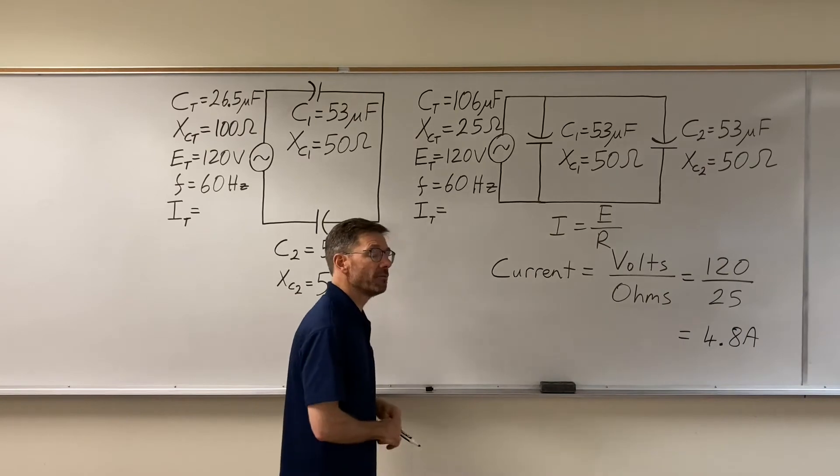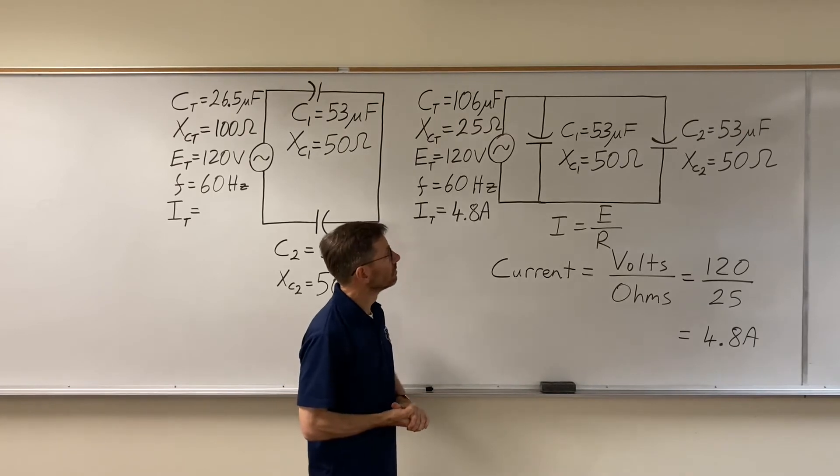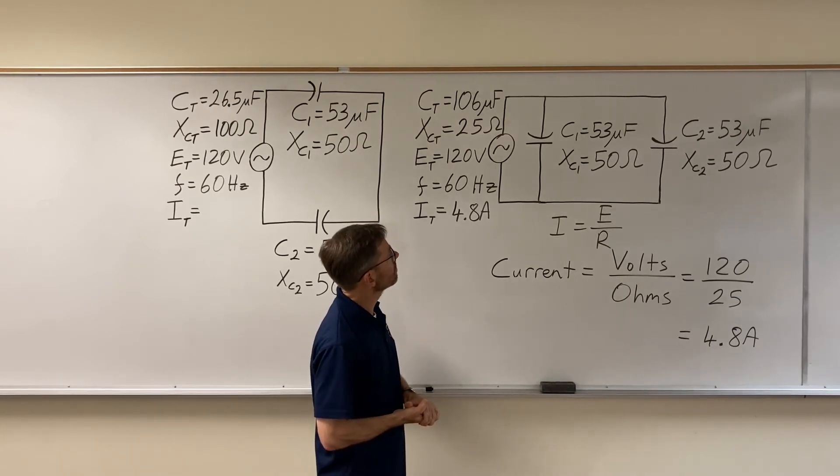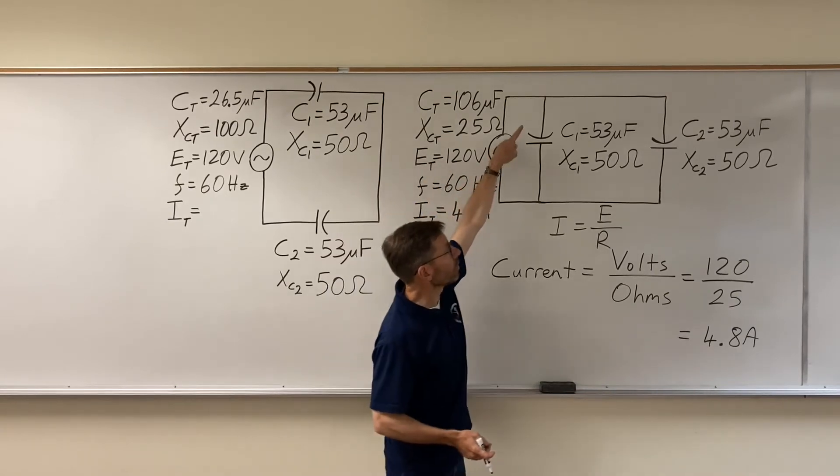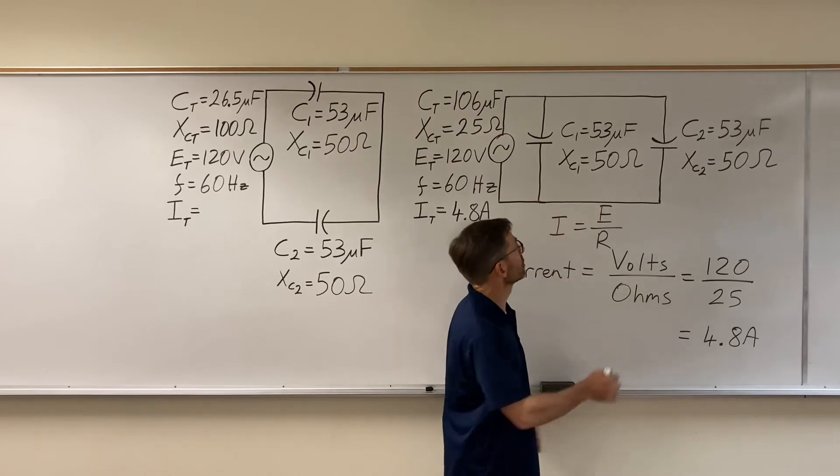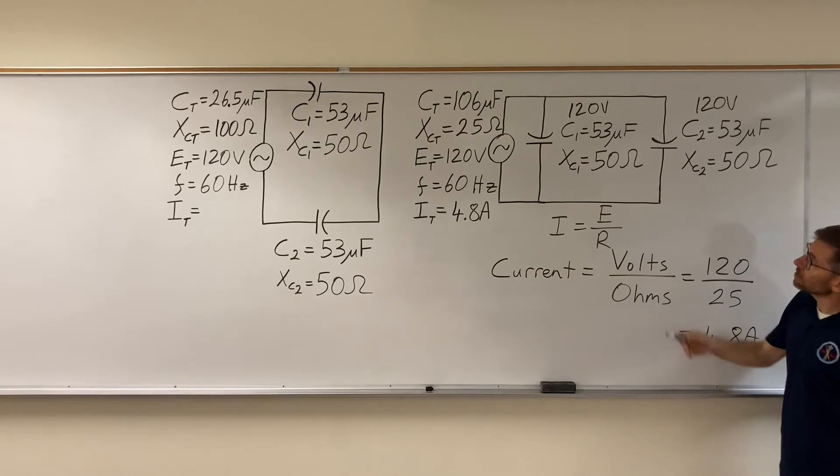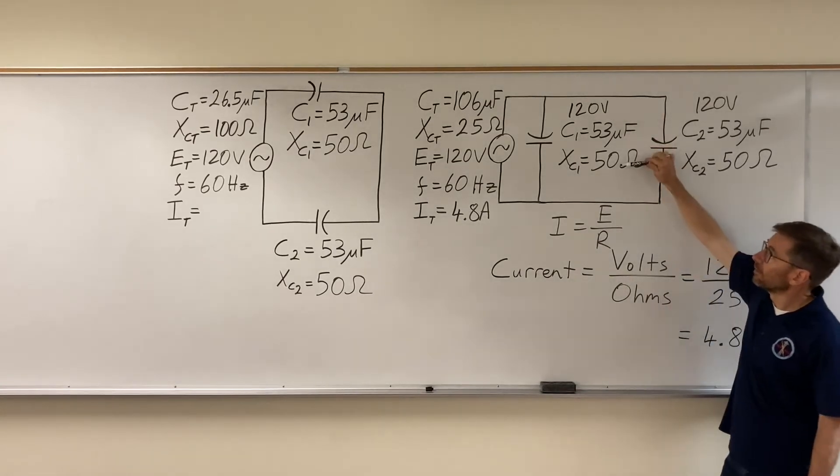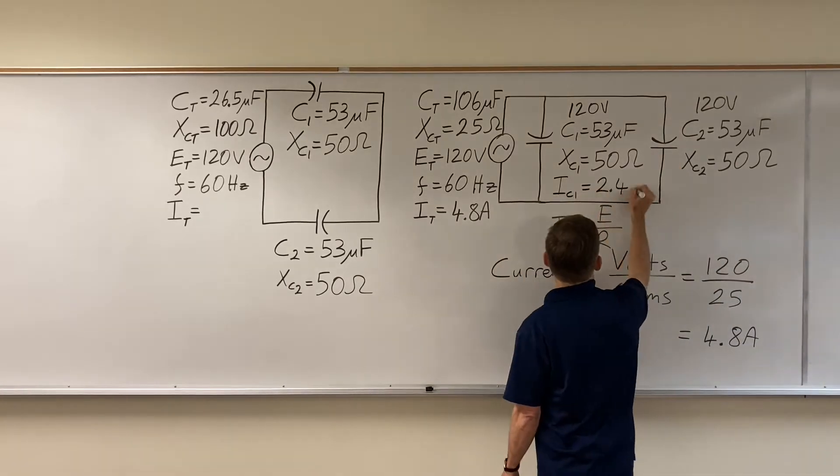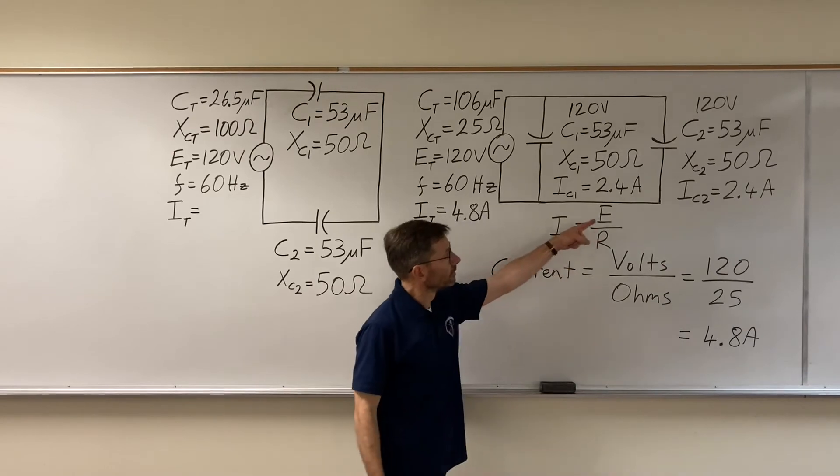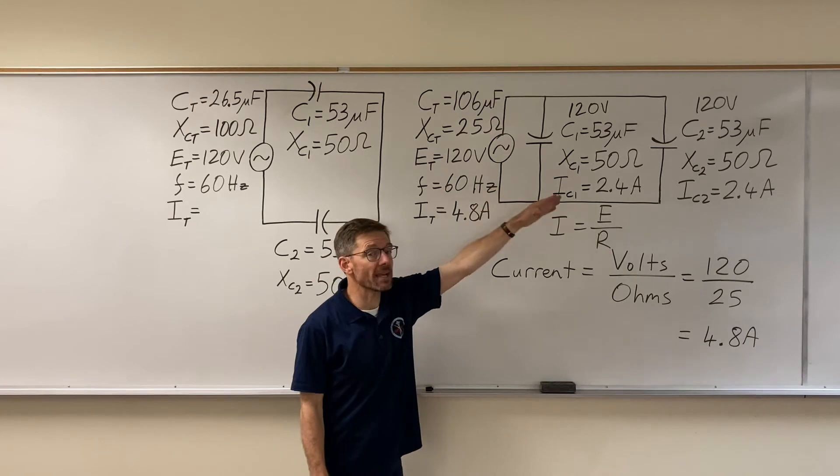So if I take this, I'm going to find I have 4.8 amps in the parallel circuit. And I can double check it: 120 volts, do I have 120 volts on this branch, 120 on this branch? Parallel circuit rules: same voltage on each branch. 120 volts, 50 ohms, 120 over 50, sure enough 2.4 amps, 2.4 amps.